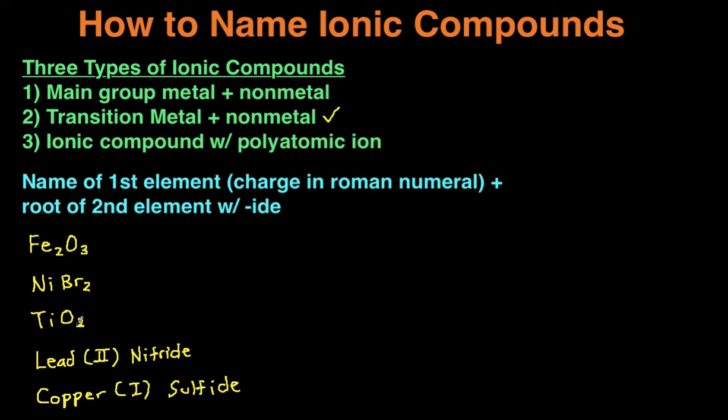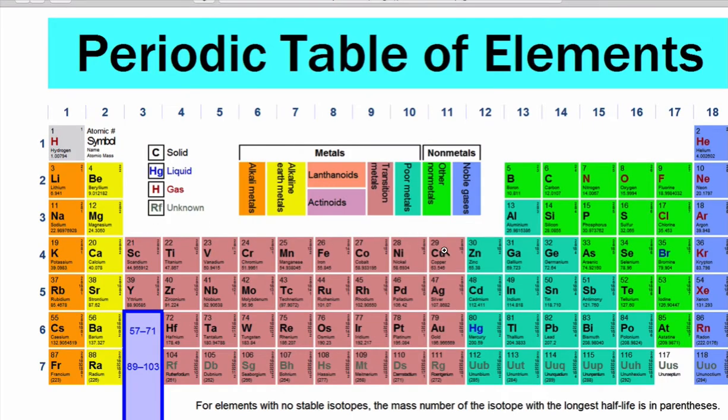And here's the rules, and we're going to do a couple of examples, and then the rules will make a lot more sense. You first start with the name of the first element, and then you have to indicate the charge in Roman numerals. The reason why is because transition metals can have multiple charges, unlike main group metals, which have a designated charge. For example,